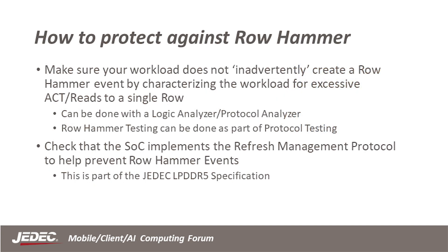To protect against row hammer, one step is to look at the number of activate commands generated during a workload — this would indicate a high traffic situation. Additionally, if your design experiences mystery ghost errors that cause a crash but can rarely be repeated, you may want to check for row hammer events. Several protocol and logic analyzers, including our DDR detective, can help with this. Currently, the JEDEC Data Integrity Committee is proposing several refresh management protocols, and if your company is a member of JEDEC you should be aware of these. If your system-on-chip supports ECC, we suggest turning that on.